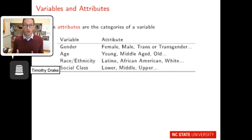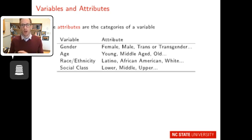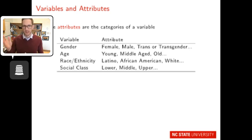It's important to distinguish between variables and their attributes. Variables such as gender, age, race/ethnicity, and social class are the broader buckets that capture the attributes within them. For gender, attributes might be female, male, transgender, other, etc. Age could be young, middle-aged, or old — or captured as a number of years. Race/ethnicity would have those categories, and social class might be lower, middle, or upper. These attributes help describe the variables.